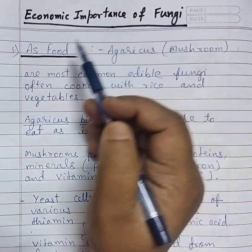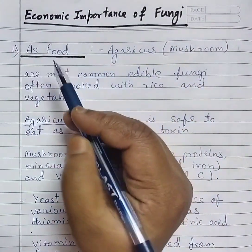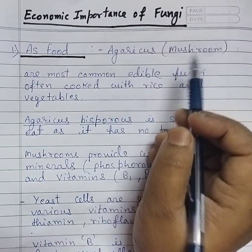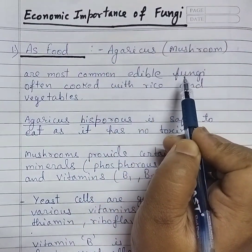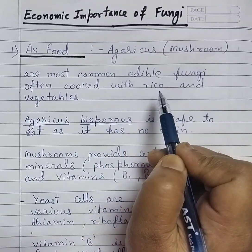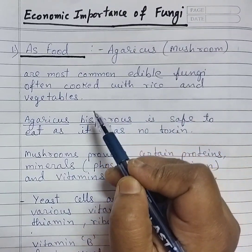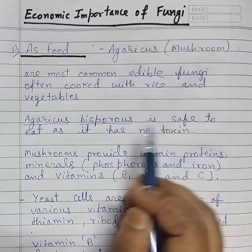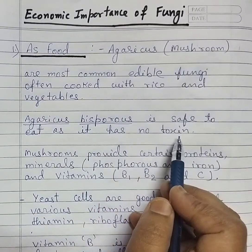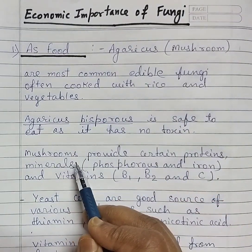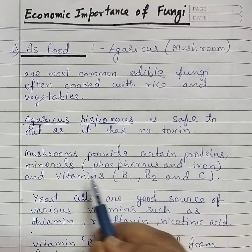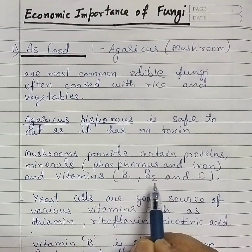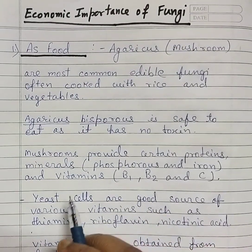Economic importance of fungi. First, as food: Agaricus, that is mushrooms, are the most common edible fungi, often cooked with rice and vegetables. Agaricus bisporus is safe to eat as it has no toxin. Mushrooms provide certain proteins, minerals like phosphorus and iron, and vitamins like B1, B2, and vitamin C.